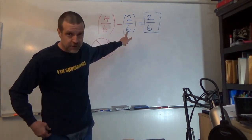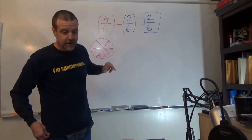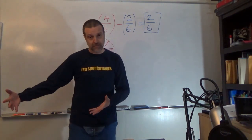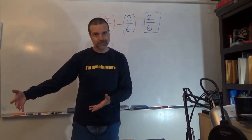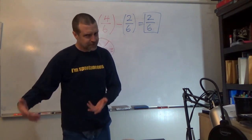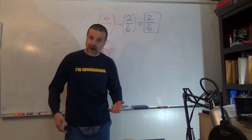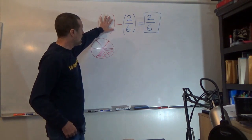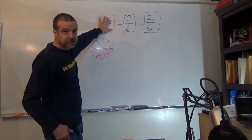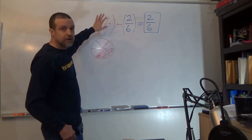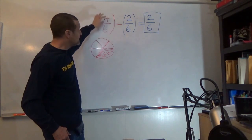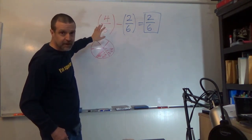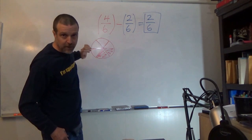Fractions are not integers. Fractions are called rational numbers, and that's another type of number — there's lots of types of numbers. This object is called a rational number because I can represent it as something over something, and that's why we call it a rational number.